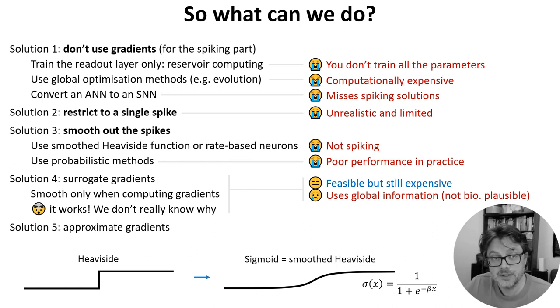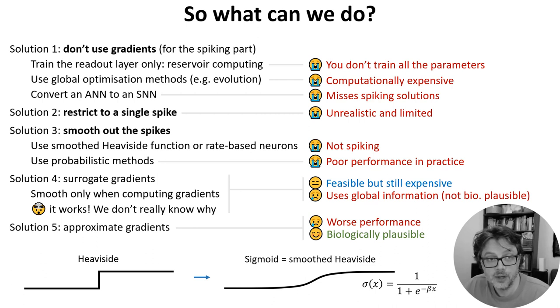To address both these issues, people use approximations that reduce the computational complexity and make the learning rules only use local information. Performance does tend to be worse, but on the upside these rules are more biologically plausible.